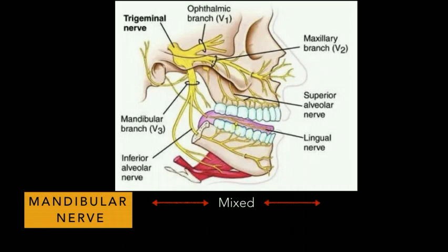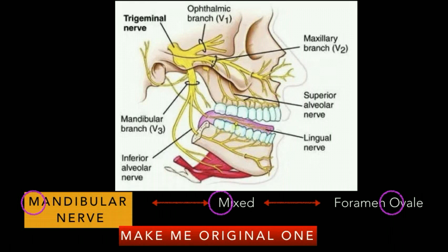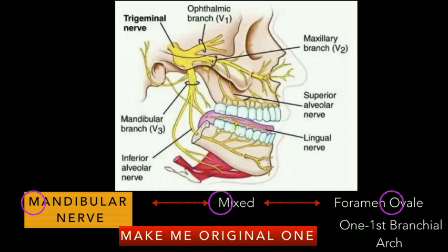The mandibular nerve leaves the middle cranial fossa through the foramen ovale. To remember this, here's a simple mnemonic: take M from mandibular nerve, M from mixed, and O from ovale — 'Make Me Original One.' The number one is added to remind you that the mandibular nerve is the nerve of the first branchial arch, supplying all structures derived from the first branchial arch, also called the mandibular arch.